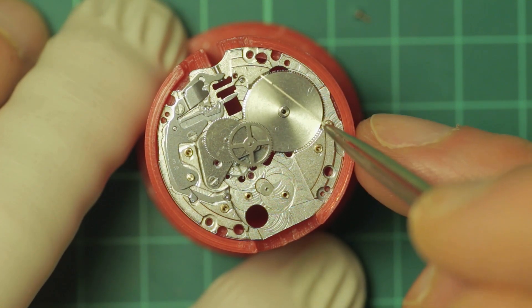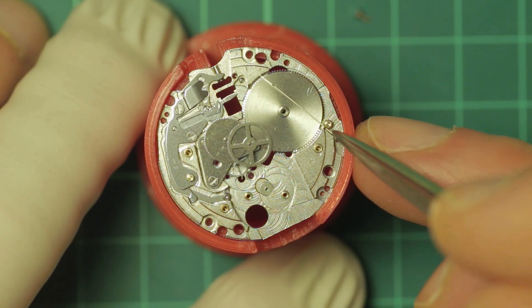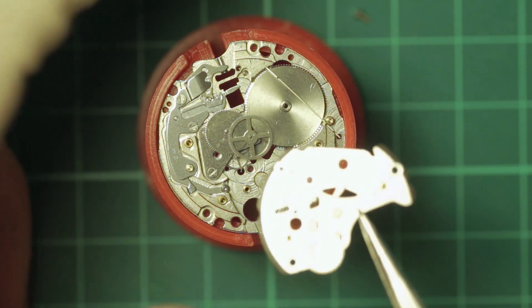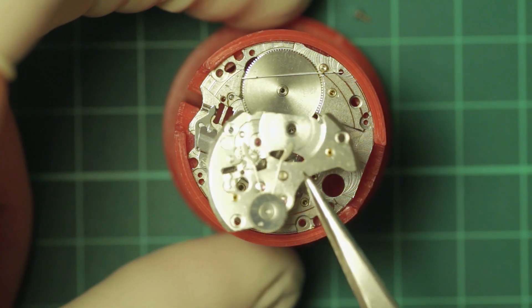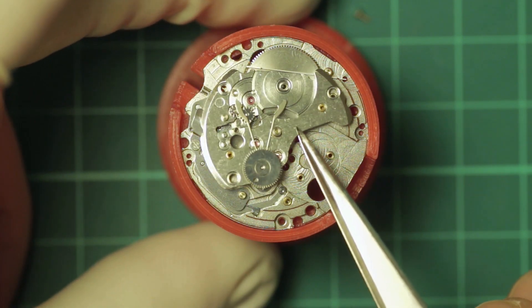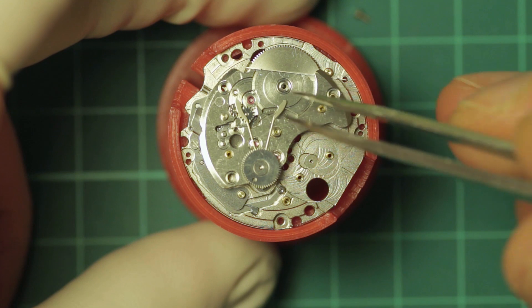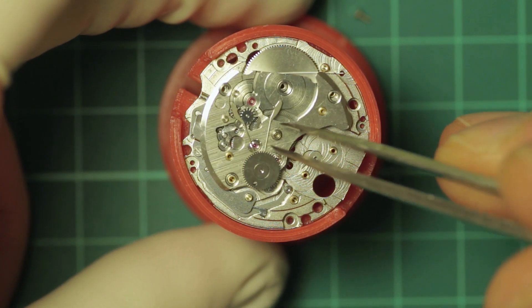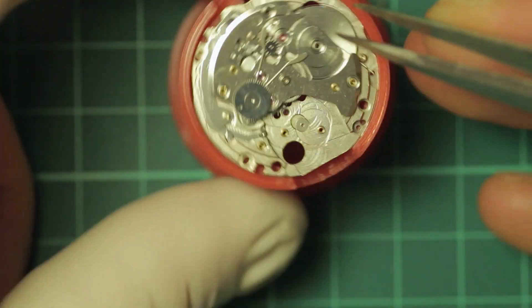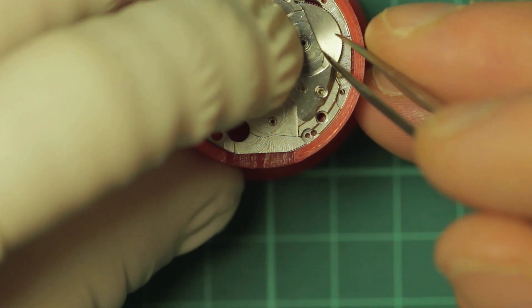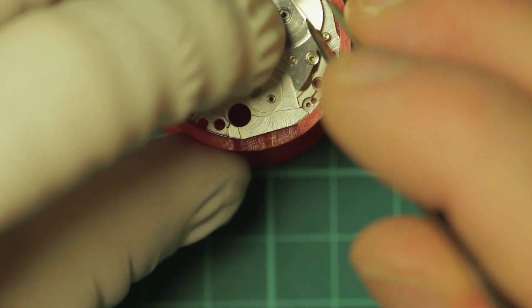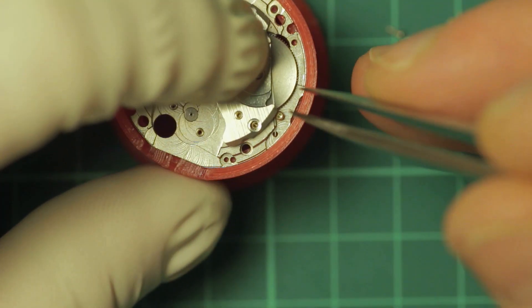But if you do have a 1A auto oiler, they are perfect for capped jewels on Seiko or any other watch that uses a capped jewel system on the train. After refitting the click spring, which you can see me just wiggling out of the way there with my tweezers, the bridge is refitted.